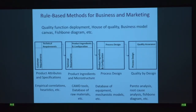Another example of rule-based methods is the QFD — quality function deployment. For chemical product design, it has been modified: we go from product attributes to product ingredients and microstructure, then to process design and quality by design. We organize all the elements to execute each step of the QFD.